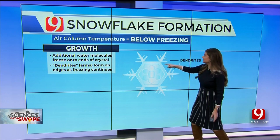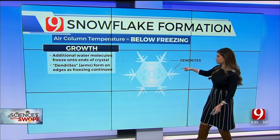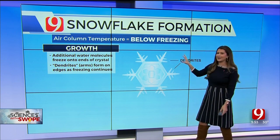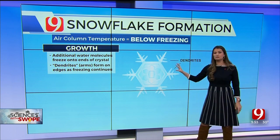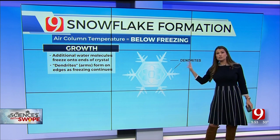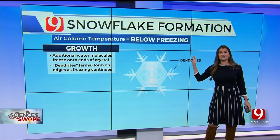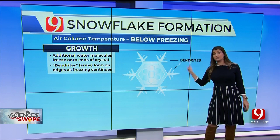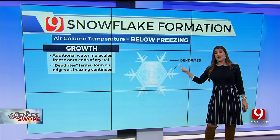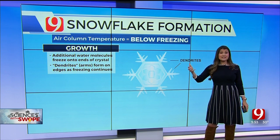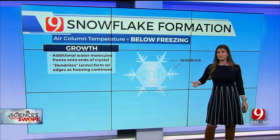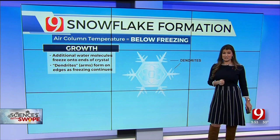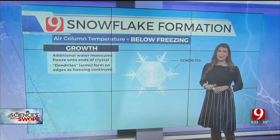Eventually the little dendrites start to form — which, by the way, means arms — and those are the little six sides that are so beautiful. No two snowflakes alike, of course. When the air is colder you get a different shape that looks more like a needle or a plate. But these are my favorite — the dendrites. They're gorgeous. Hope that helps!